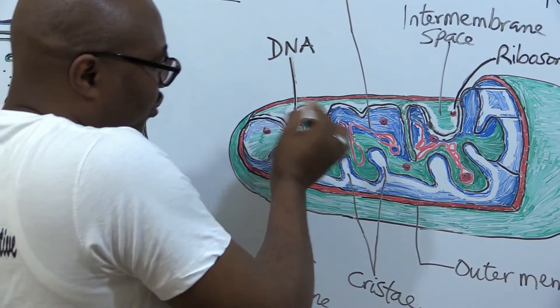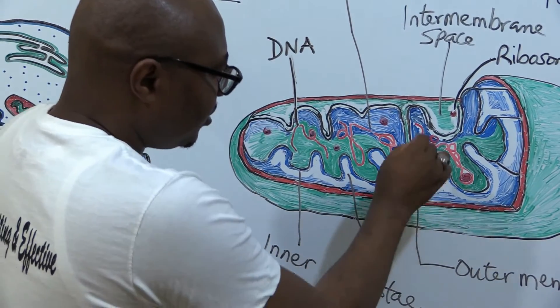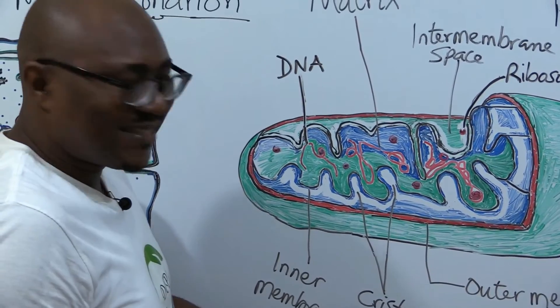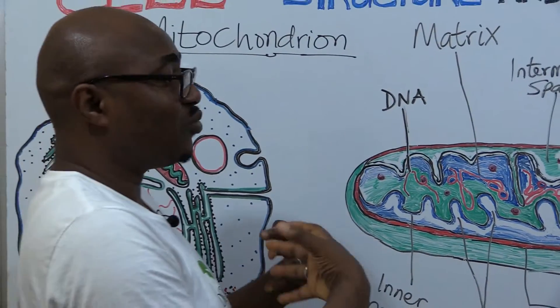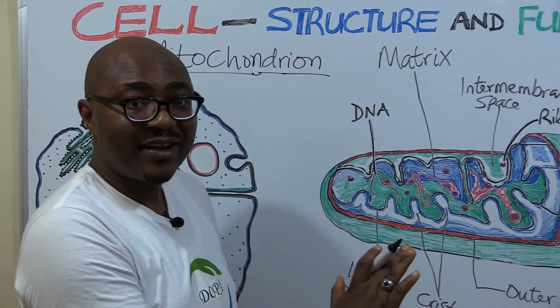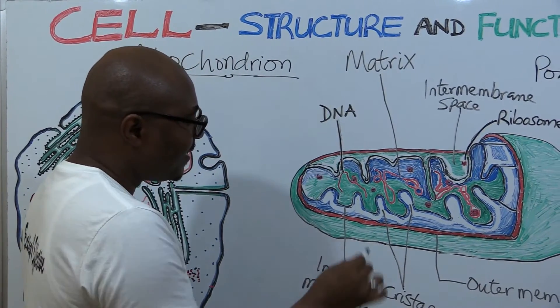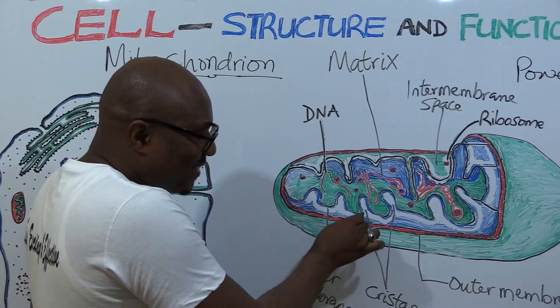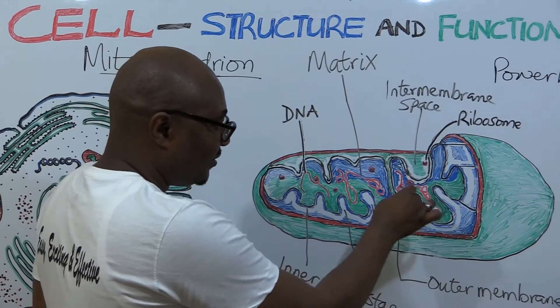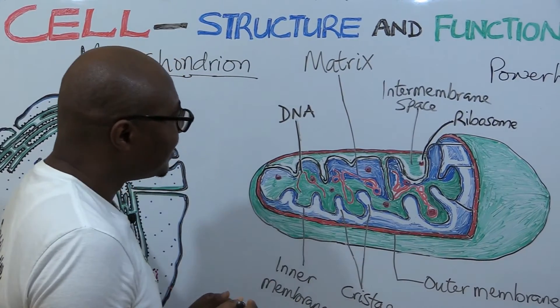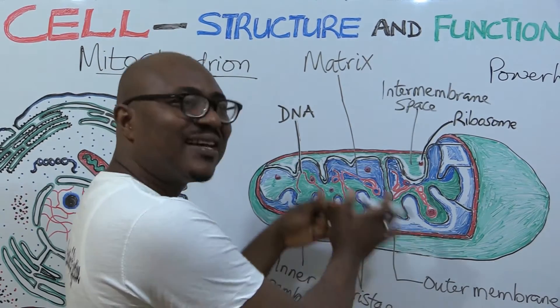That inner covering is thrown into folds, as you can see, and it's called cristae, those folds. The reason is simple: in order to increase the surface area for a lot of important reactions. A lot of reactions take place around this inner membrane. That's why it's folded. The intermembrane space is between the outer and the inner.